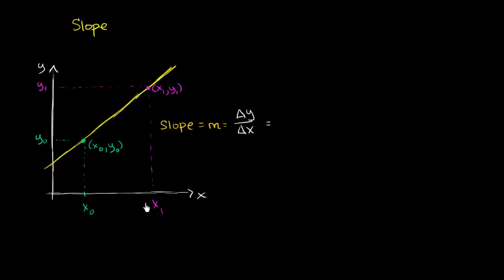That's change in y divided by change in x. Just as a reminder, that triangle is the Greek letter delta — it's shorthand for "change in whatever." So change in y over change in x. Let's think about what this is for this example. Change in x: we are moving from x naught to x₁, so our change in x is x₁ minus x naught. That is our change in x.